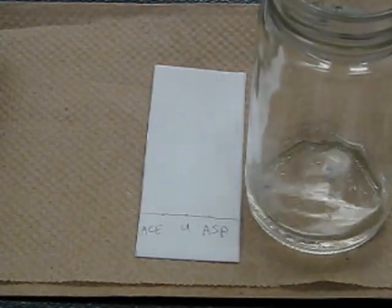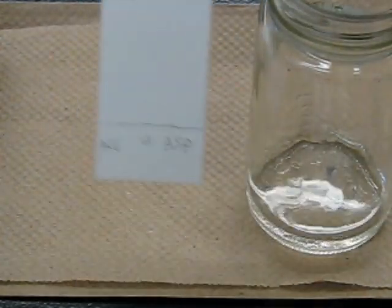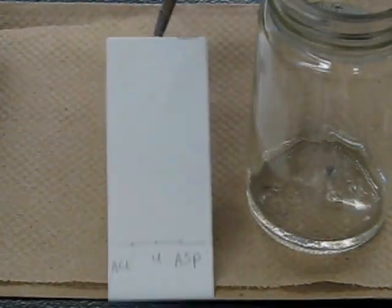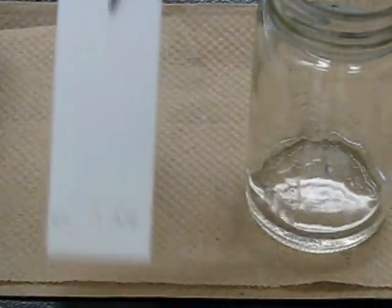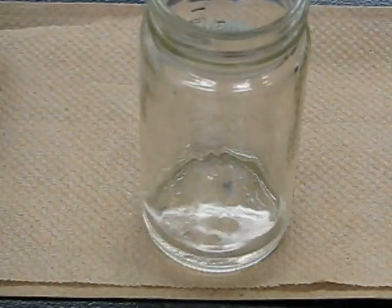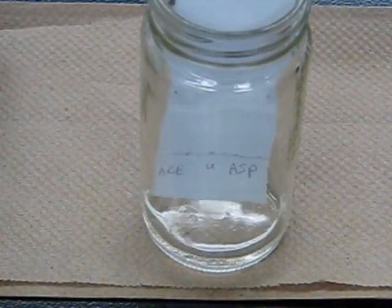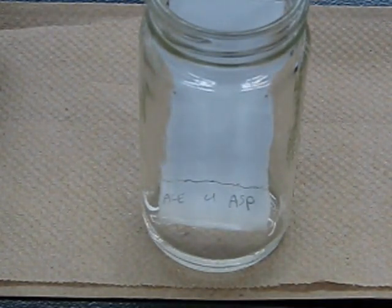Now that you've got the TLC spotted, grab your chromatography jar which should have the eluting solvent - in this case it's a mix of hexanes, ethyl acetate, and acetic acid. You're going to grab your TLC plate with a pair of tweezers, or if you're using your hands, only touch the top. When you set it in the jar, the baseline needs to be above the solvent line.